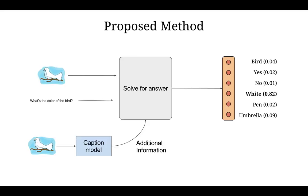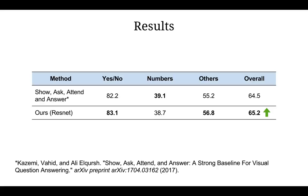In our model, we first feed an image into a captioning model, and the output of the captioning model is then passed onto a VQA system. Finally, an answer is retrieved. Our experiment shows that this hybrid model outperforms the existing best VQA model.